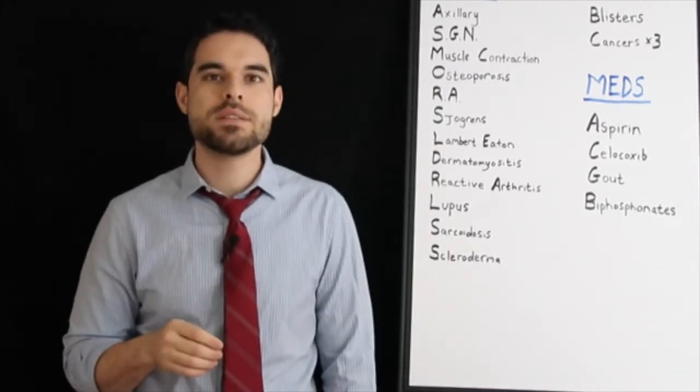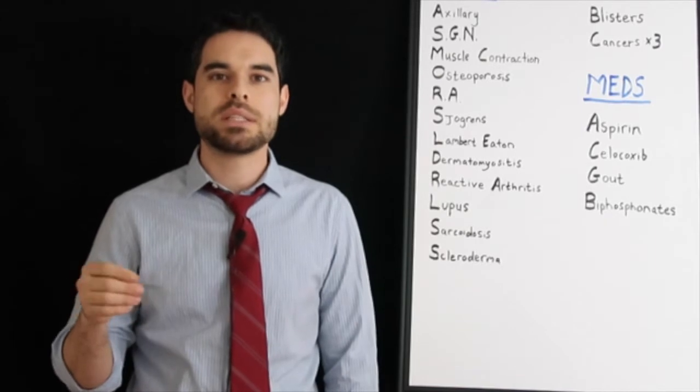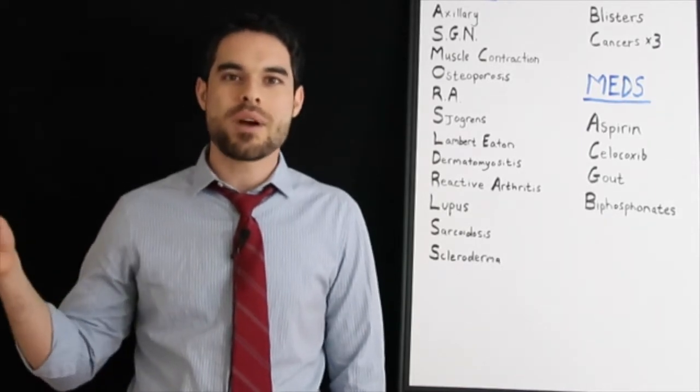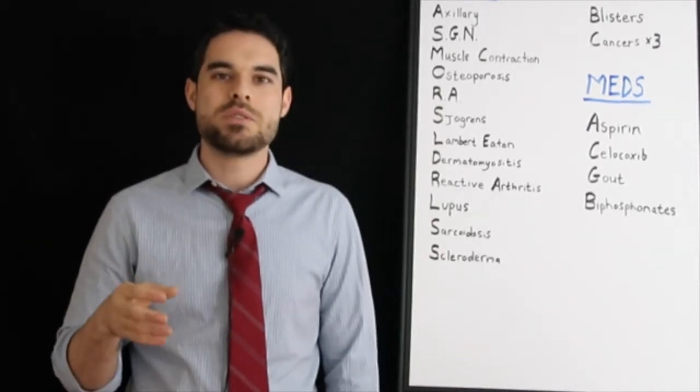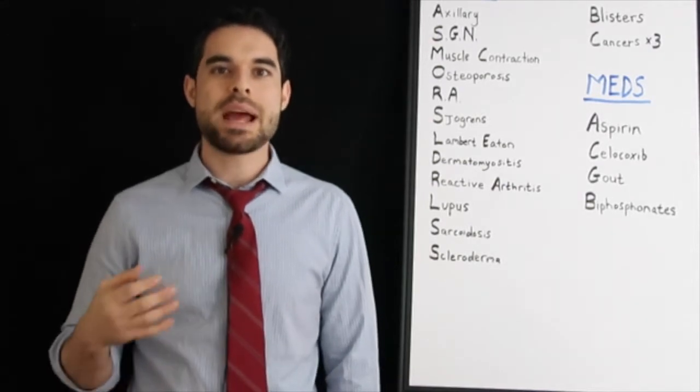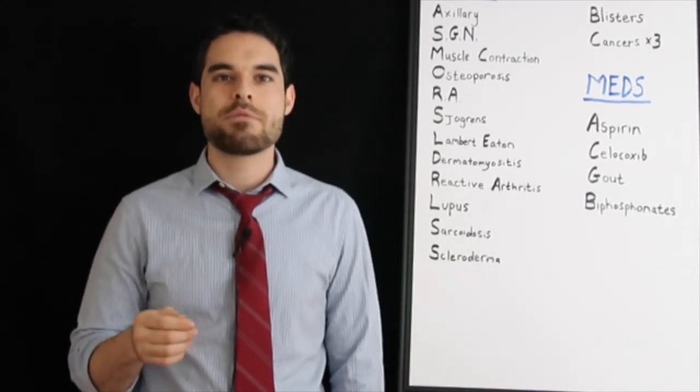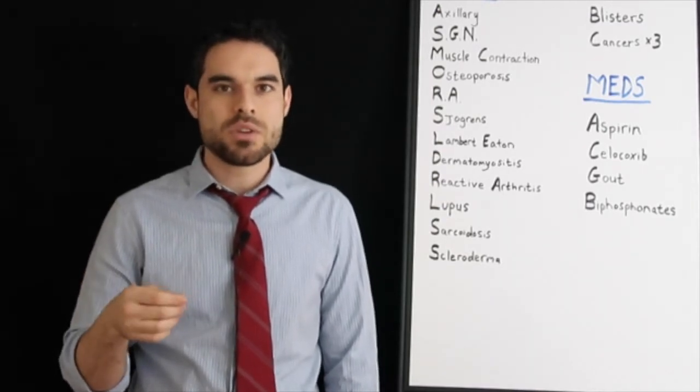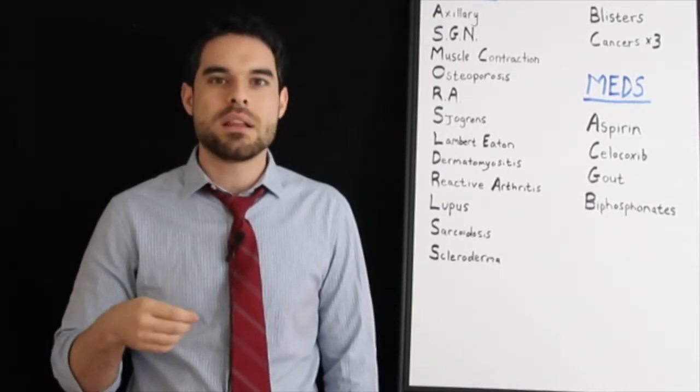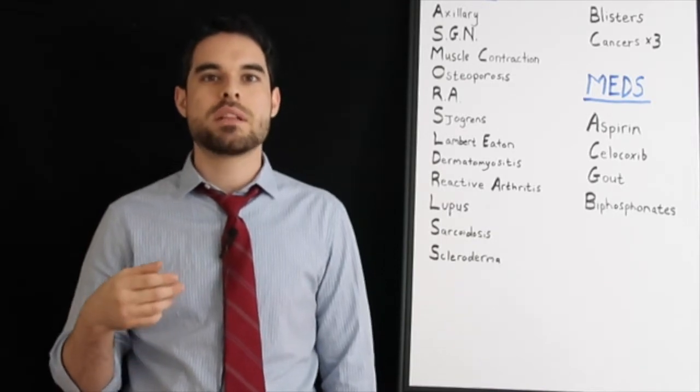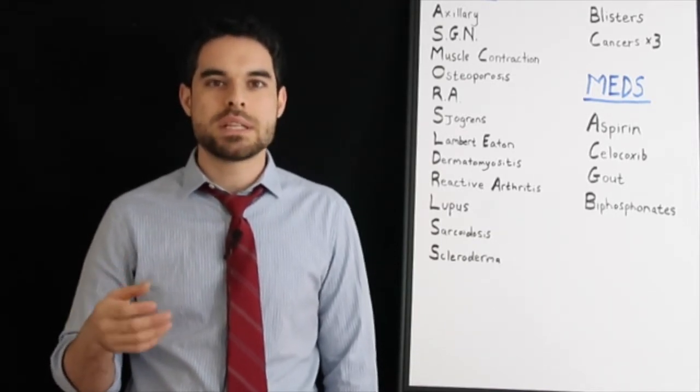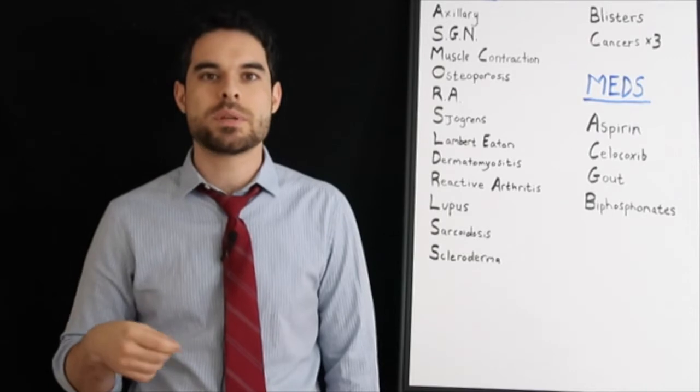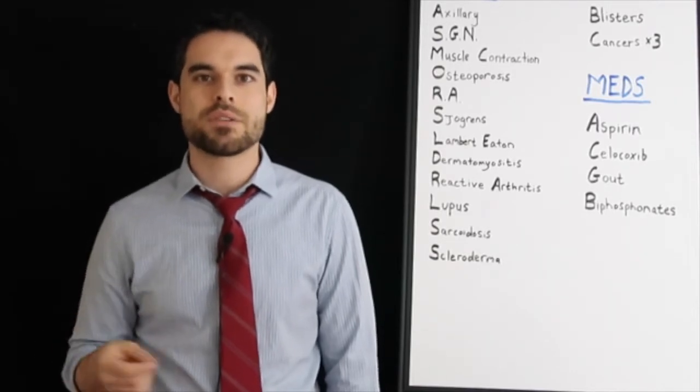Reactive arthritis. This is one of the HLA-B27 seronegative spondyloarthropathies. With these, you want to make sure that you have proper chest expansion, which can be limited in these situations. And reactive arthritis in particular develops usually after some kind of insult like Shigella, Salmonella, Campylobacter, Yersinia, even Chlamydia, where you have the presentation of Can't See, Can't Pee, Can't Climb a Tree, urethritis, uveitis, and arthritis.